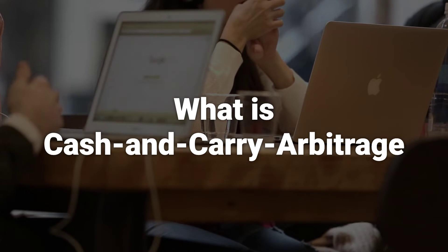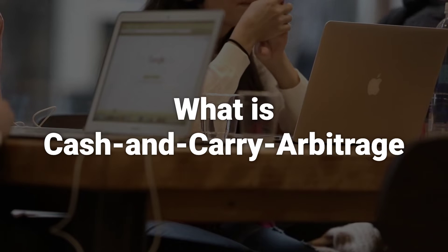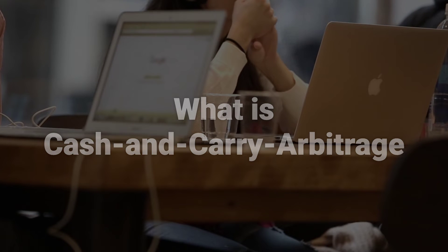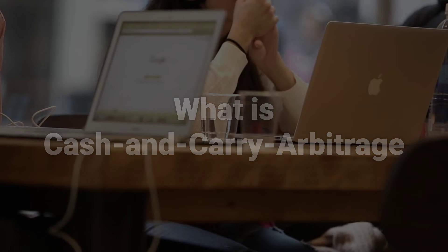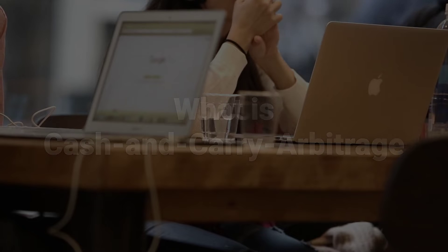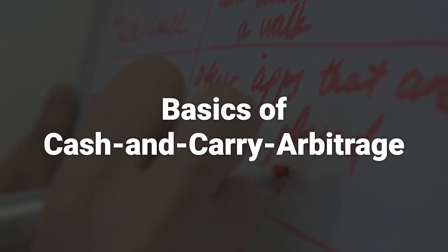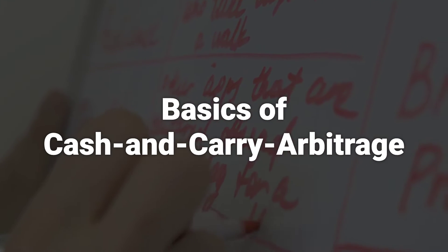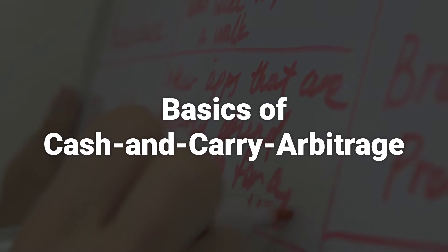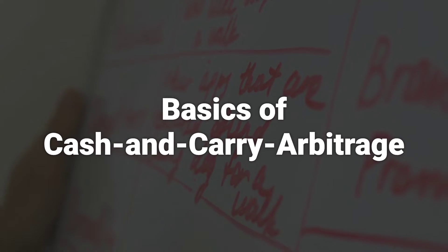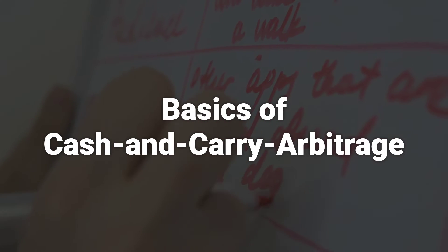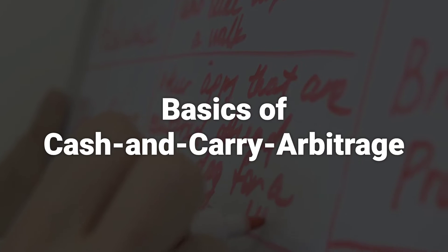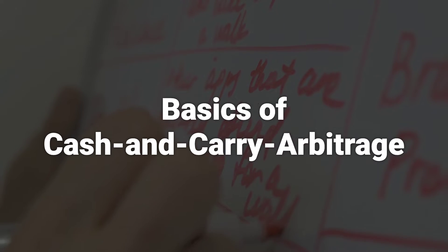For this arbitrage to be profitable, the futures contract must be more expensive than the underlying asset. In cash and carry arbitrage, the arbitrageur holds the asset until the expiration of the futures contract, at which point it is delivered against the contract.